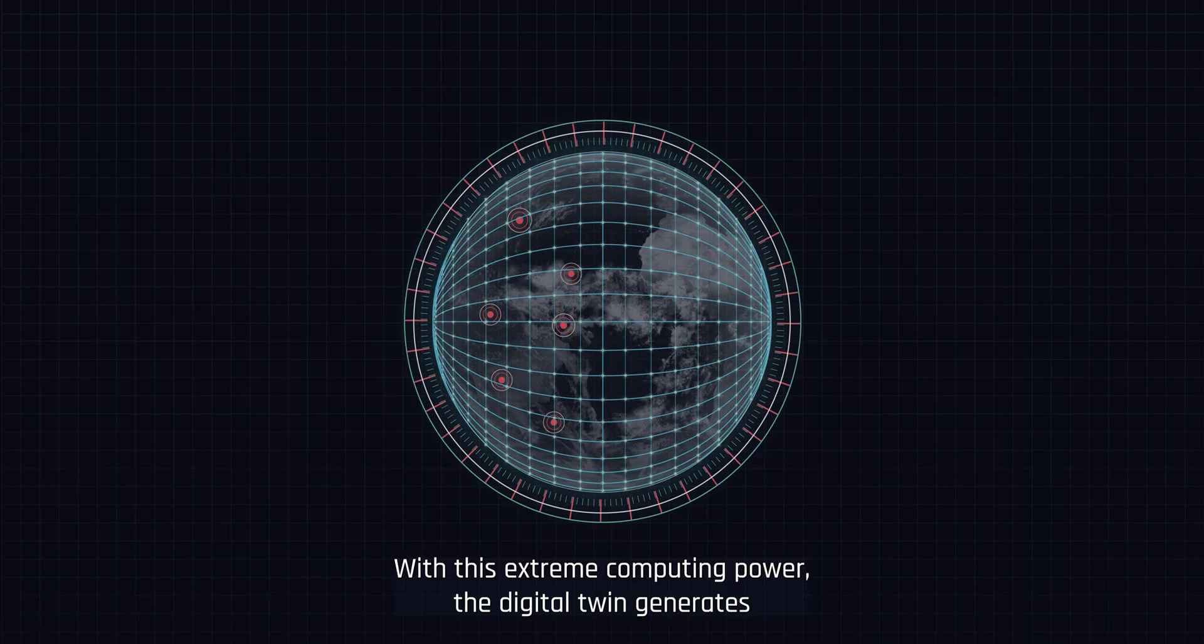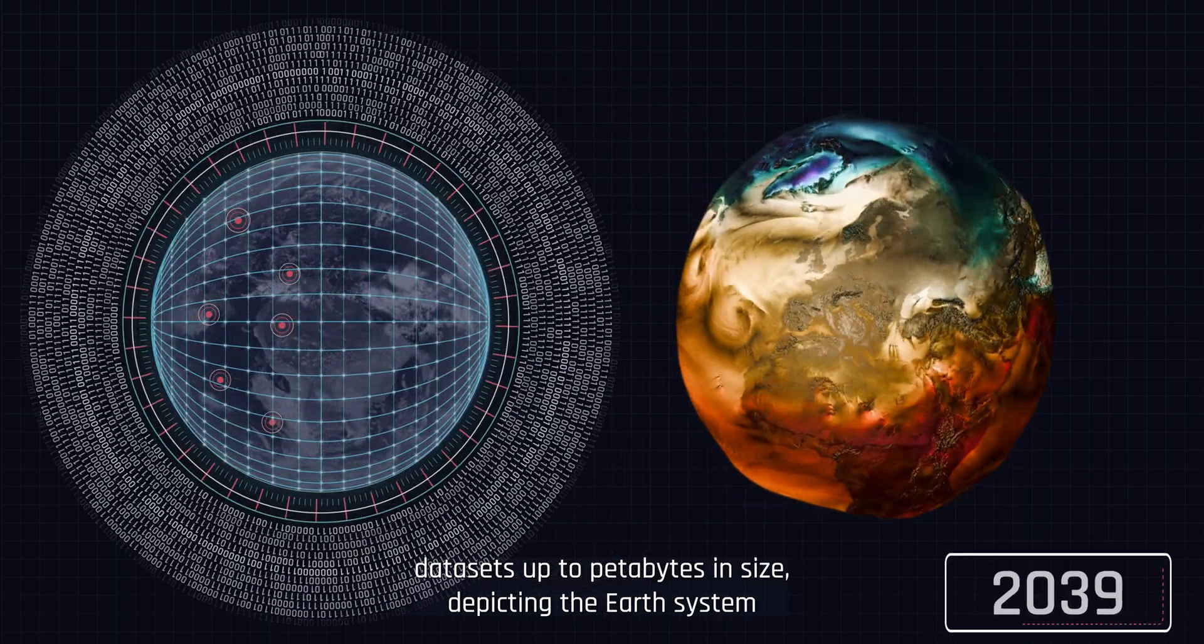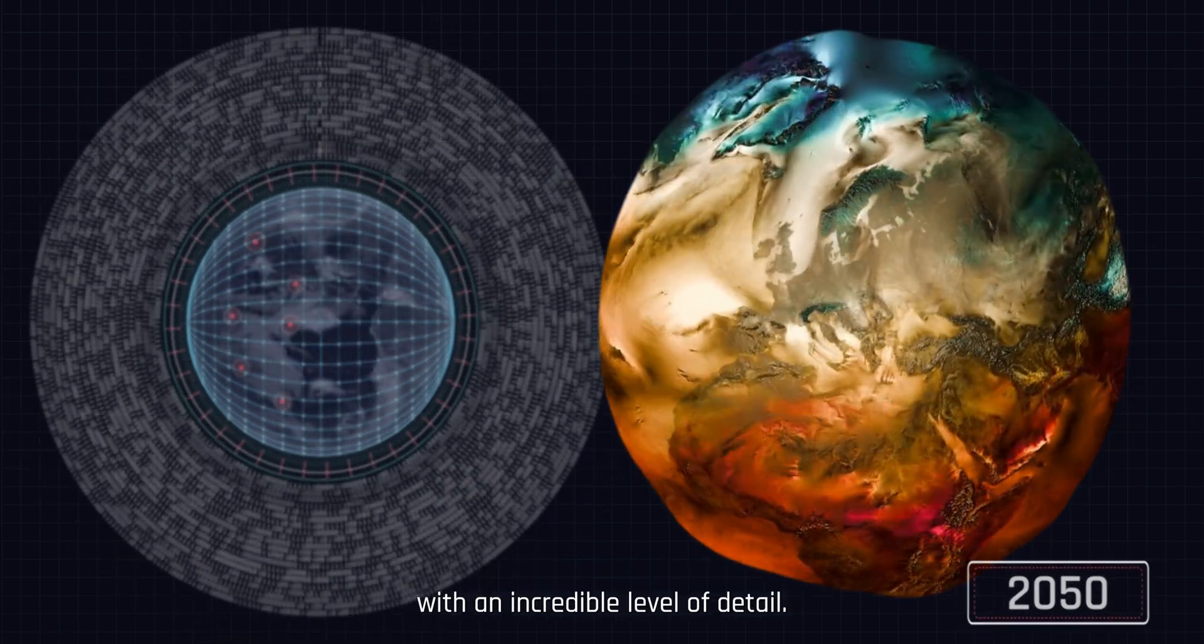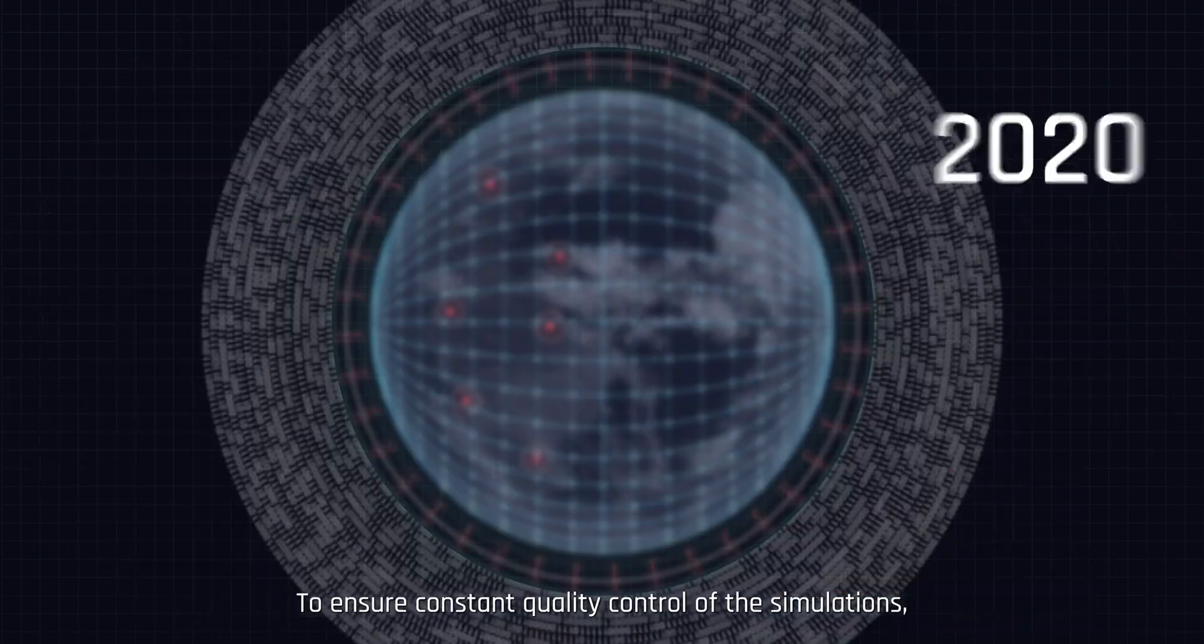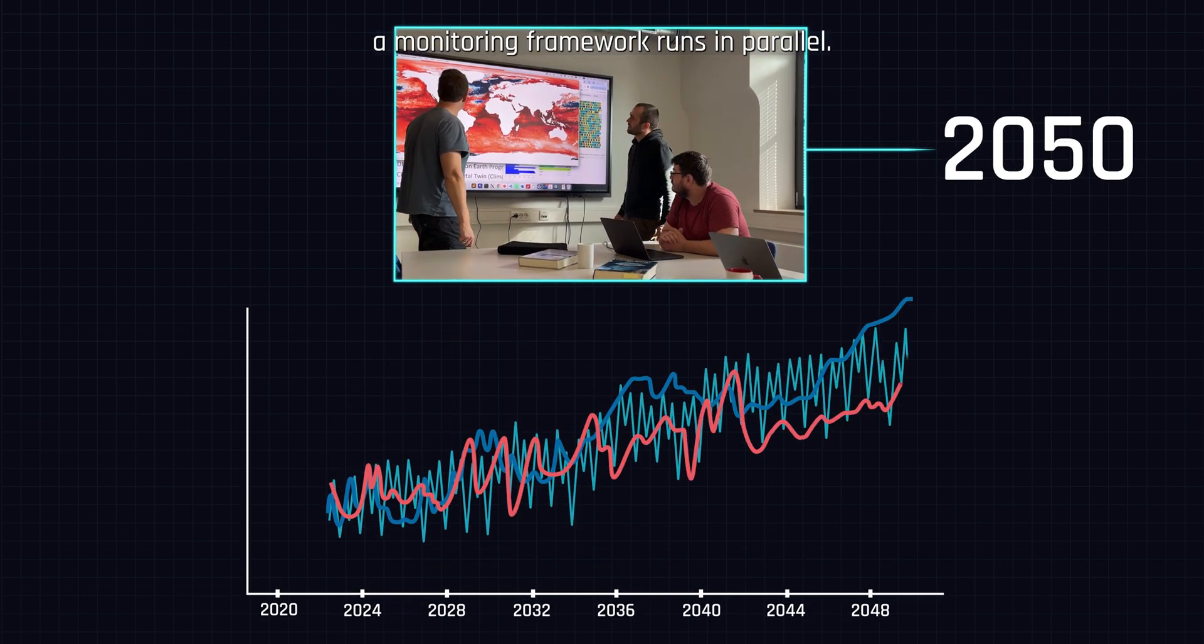With this extreme computing power, the Digital Twin generates datasets up to petabytes in size, depicting the Earth system with an incredible level of detail. To ensure constant quality control of the simulations, a monitoring framework runs in parallel.